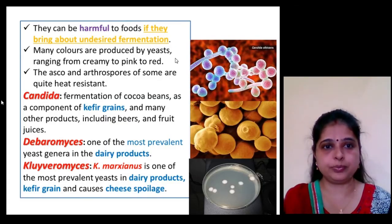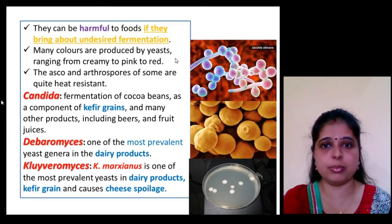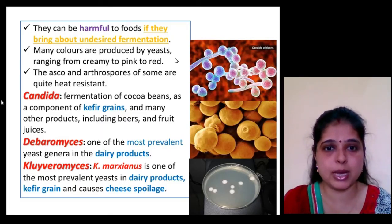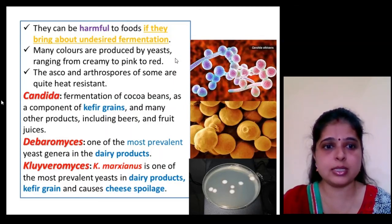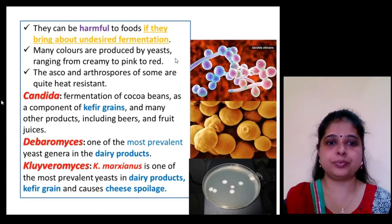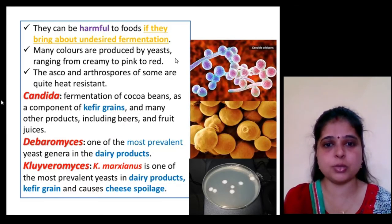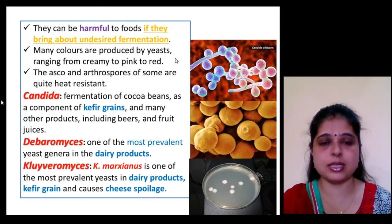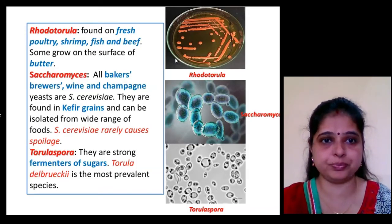Candida causes the fermentation of cocoa beans, is a component of kefir grains, and is found in many products including pears and fruit juices. Debaromyces is one of the most prevalent yeast genera in dairy products. Kluyveromyces — the species marxianus — is one of the most prevalent yeasts in dairy products, kefir grains, and cow's cheese spoilage.